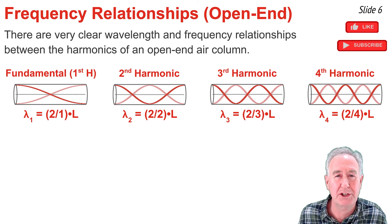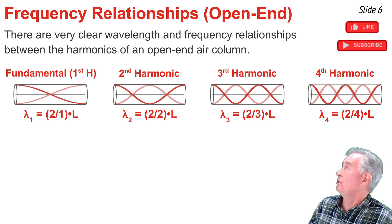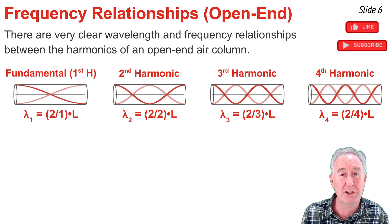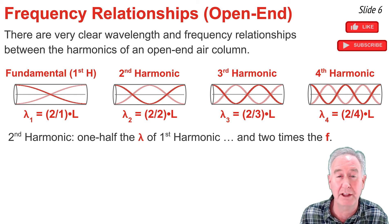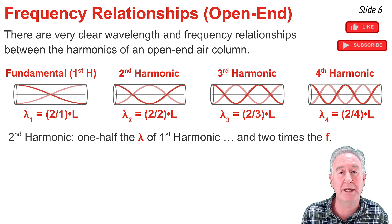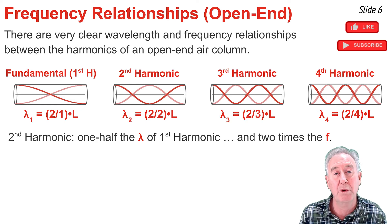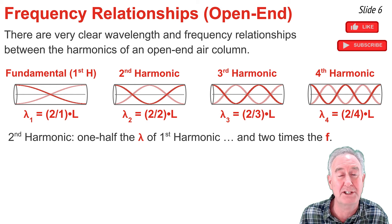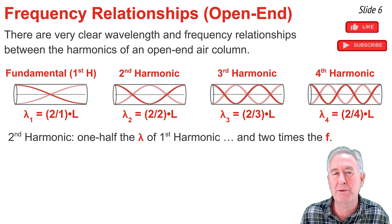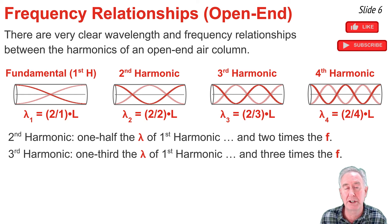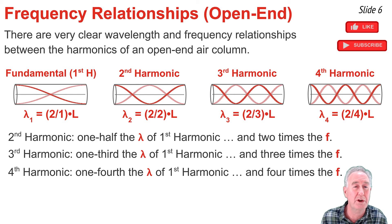There are also very clear frequency relationships between the harmonics of an open-end air column. For the second harmonic, the wavelength is one-half the wavelength of the first harmonic — it has half the wavelength but the same speed value. Since speed equals frequency times wavelength, in order for the product to be the same, the second harmonic must have two times the frequency of the first harmonic. We reason similarly for the third and fourth harmonics: the third harmonic has one-third the wavelength, so its frequency must be three times that of the first harmonic, and the fourth harmonic must be four times that of the first harmonic.